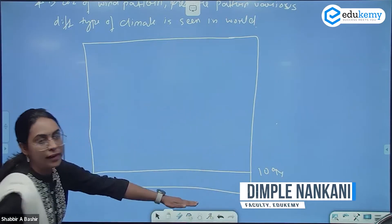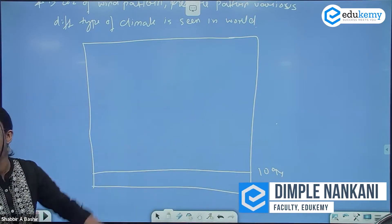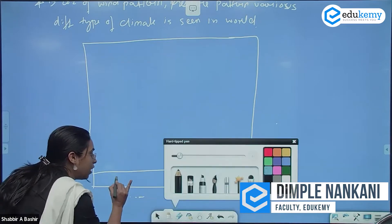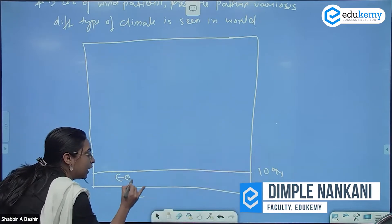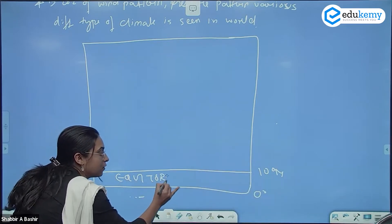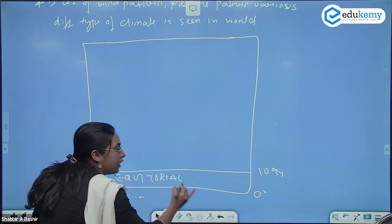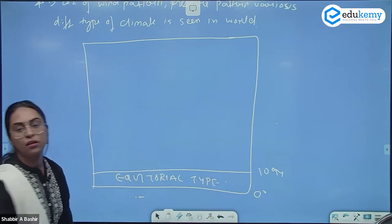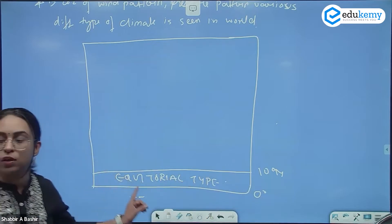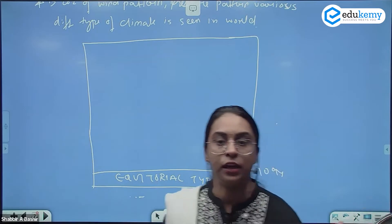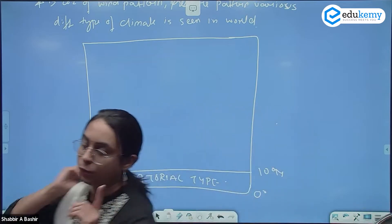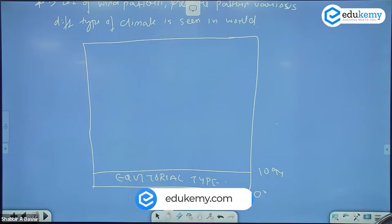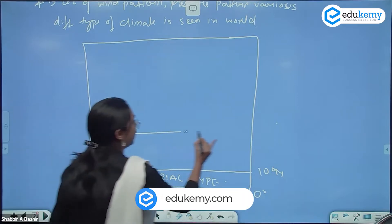From 0 degree to 10 degree north, we have the equatorial type of climate. Please draw this along with me — this is important. From 0 degree to 10 degree north we have the equatorial type of climate, then from 10 degree to 30 degree north.